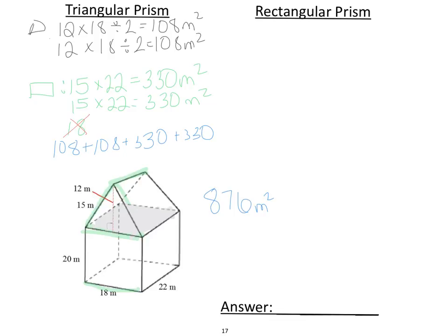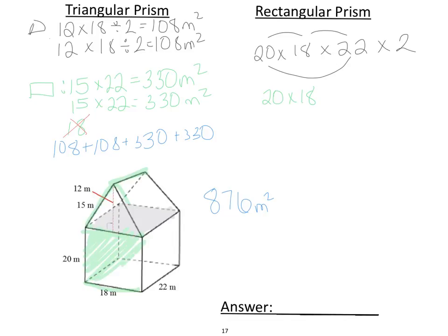Now let's go into the rectangular prism. We write out the dimensions: 20 by 18 by 22. We're going to use the smiley face method, which means multiplying by two. But we have to keep in mind that the shaded gray part — the top of the rectangular prism — is not on the outside, so we don't count it. Looking at 20 by 18, both the front and the back faces are on the outside, so we multiply 20 by 18 by 2, giving us 720 meters squared.